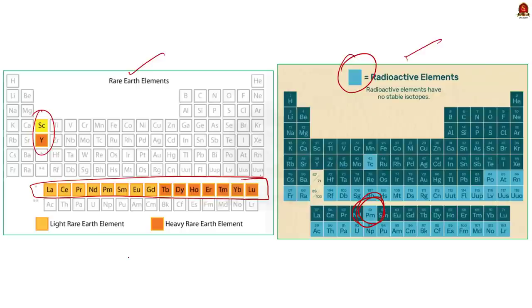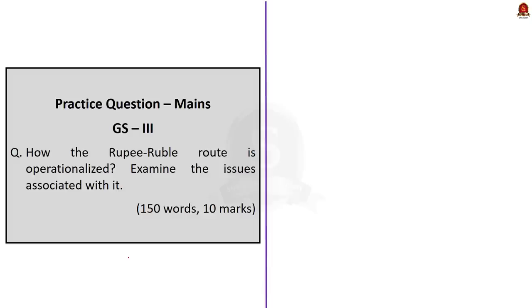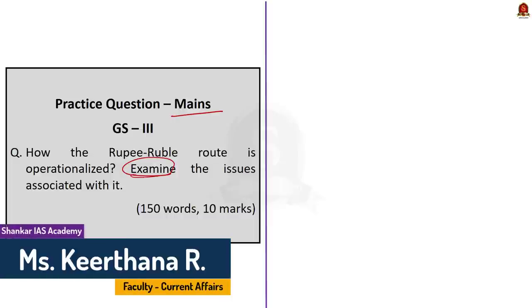The quiz practice prelims question will be displayed as a poll along with this video — after this discussion, go to that poll and answer the question. In tomorrow's video the answer will be published. Now the main practice question: how is the rupee-ruble route operationalized? Examine the issues associated with it. The first half requires you to mention the Vostro and Nostro accounts and how they are operationalized. The second half asks you to examine the issues — examine means investigate, establish key facts, mention why these facts are important and mention the implications of such issues. We have discussed all these core points in the discussion; you just have to provide them in a structured manner. This brings us to the end of the Hindi News Analysis dated 2nd of August 2022.